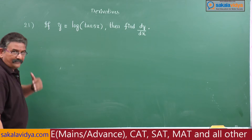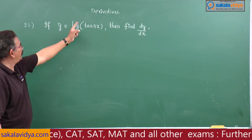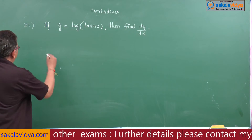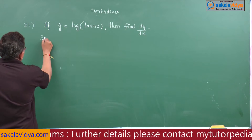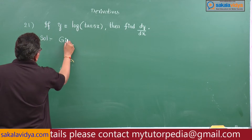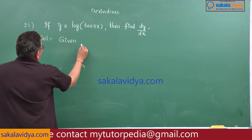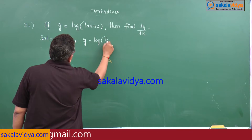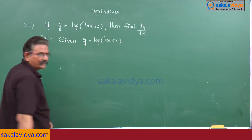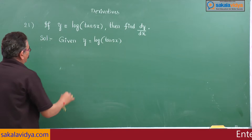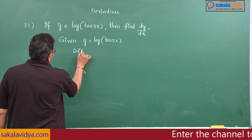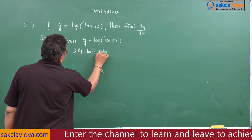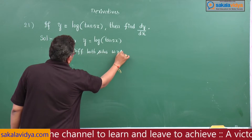This problem is given that: if y is equal to log of tan of 5x, then find dy by dx. Here, given y equals to log of tan 5x — differentiate both sides with respect to x.